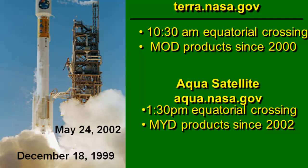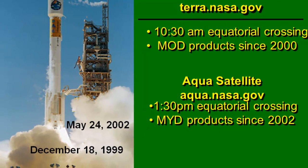When you order the products, if it has a prefix MOD, that stands for MODIS onboard the Terra satellite. And if the product prefix is MYD, that's a product from the MODIS sensor onboard the Aqua satellite.